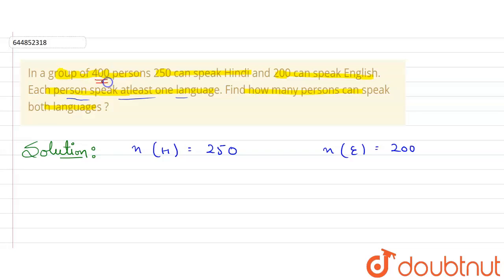And it is given that each person speaks at least one language, means out of these 400 people, all 400 people will speak at least one of the languages. It means I can consider this 400 value as union of these two sets.